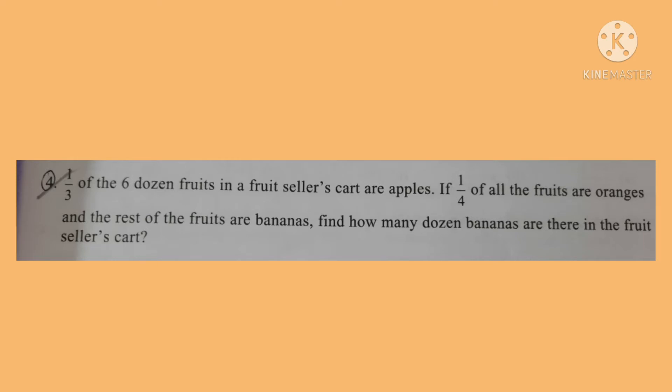1 by 3 of 6 dozen fruits in a fruit seller's cart are apples. That means the number of apples is 1 by 3 of the 6 dozen fruits — the total number of fruits in that cart is 6 dozen. The next condition is 1 by 4 of all the fruits are oranges. So the number of oranges is equal to 1 by 4 of 6 dozen fruits.